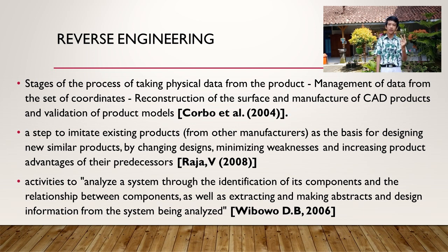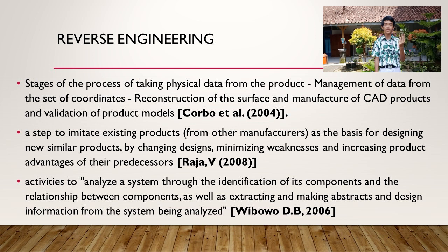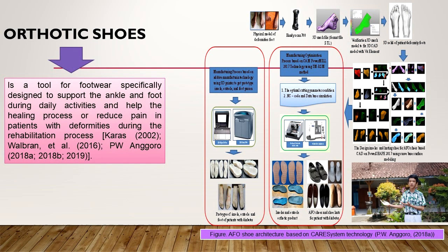Two, from Raja: a step to imitate an existing product as a basis for designing new similar products by changing the design, minimizing weaknesses, and increasing product advantages over their predecessor. Three, from Vivo: activities to analyze a system through the identification of each component and the relationship between components, as well as extracting and abstracting design information from the system being analyzed. Artic shoe is a tool for footwear specifically designed to support the ankle and foot during daily activities and help the healing process or reduce pain in patients with deformities during the rehabilitation process.